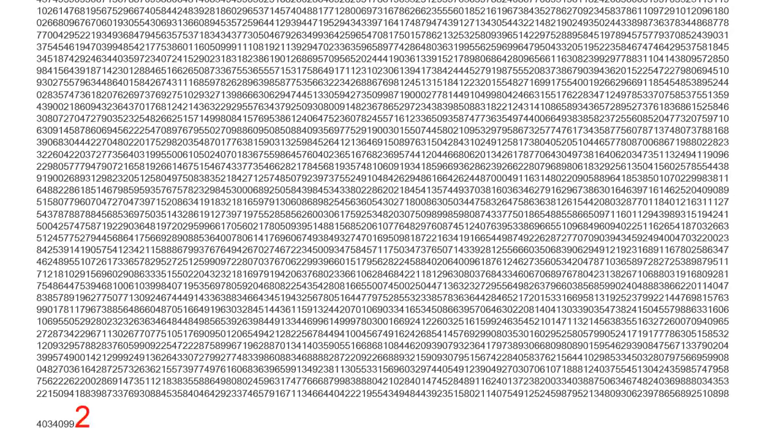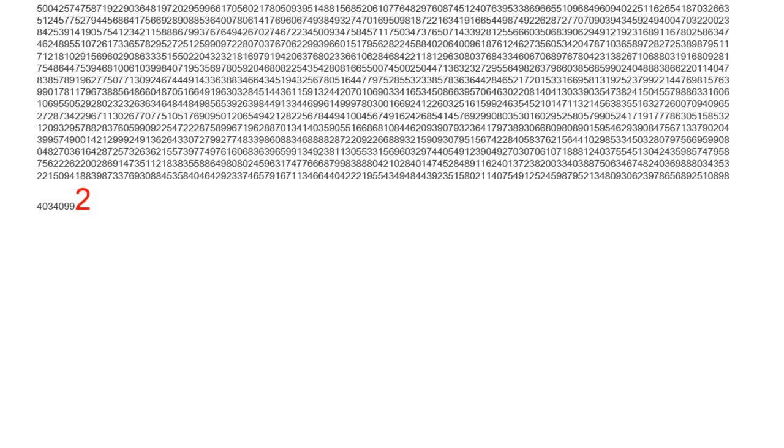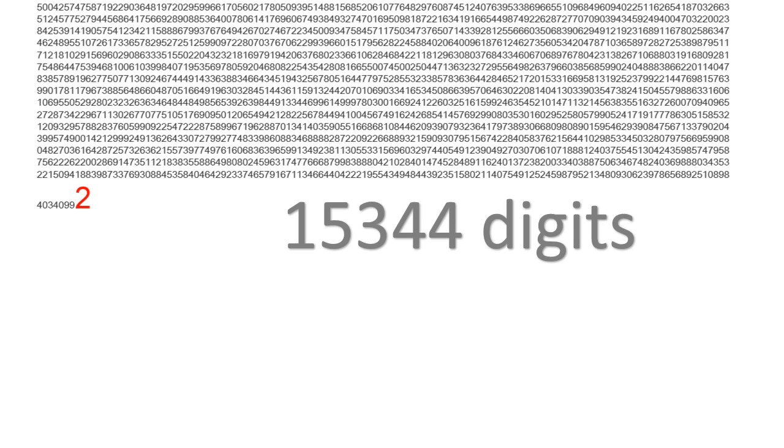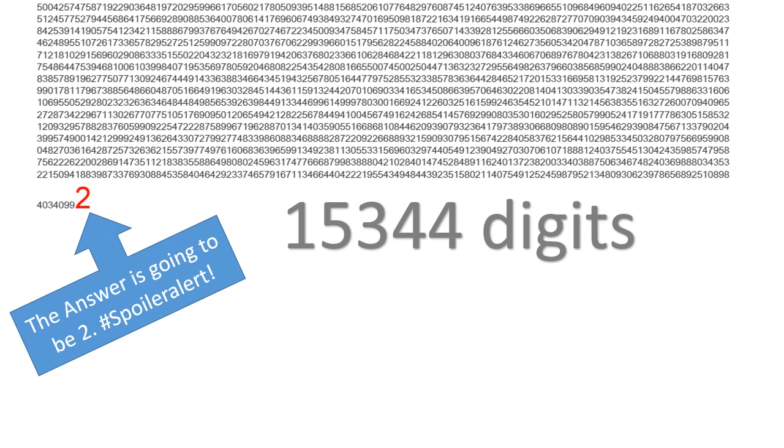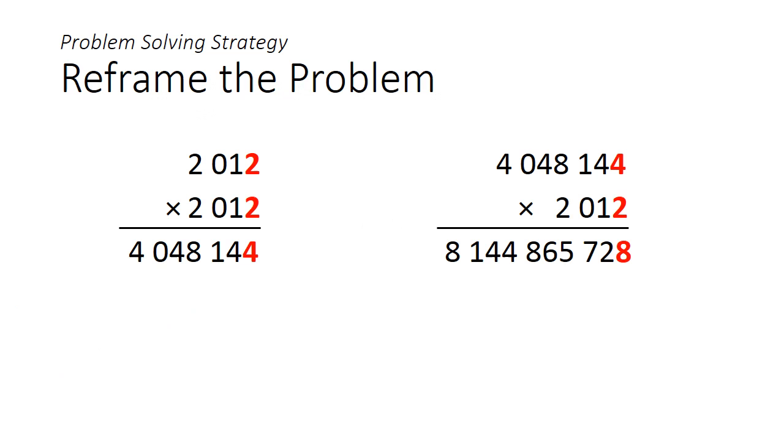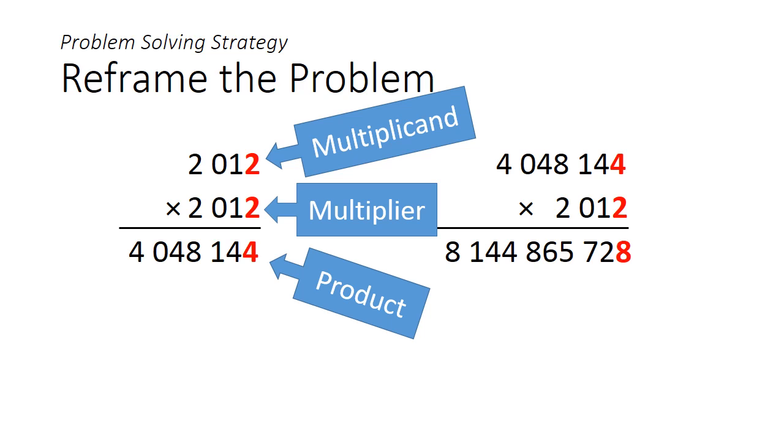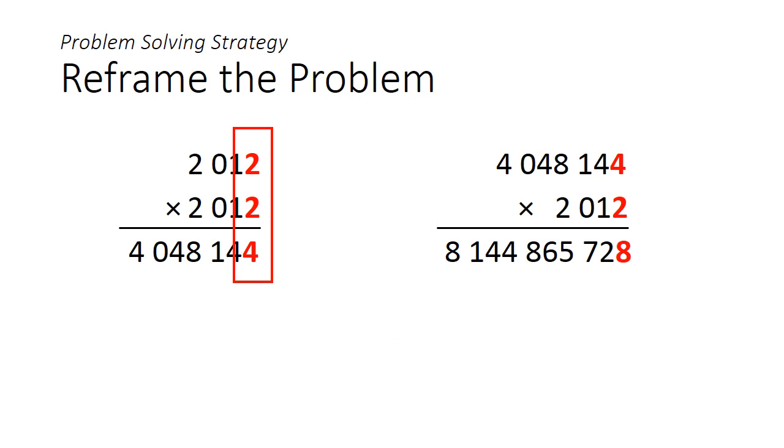Once again, 2012 to the power of 2017 is quite a large number. Calculating it comes out to 15,344 digits. Fortunately, we are only interested in the last digit. So one strategy that we can employ to solve this problem is to first reframe it. It turns out when you want to multiply two numbers together, the only numbers that matter in working out the last digits of the product are the last digits of the multiplicand and the multiplier. So if we want to work out the last digit of 2012 times 2012, we should only focus on 2 multiplied by 2. That gives us 4.